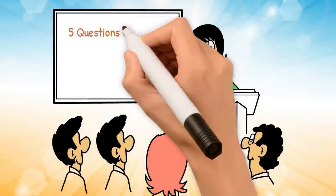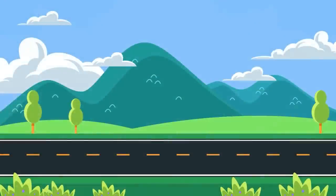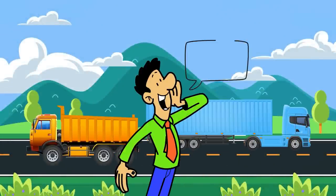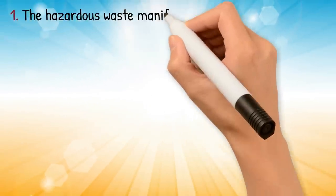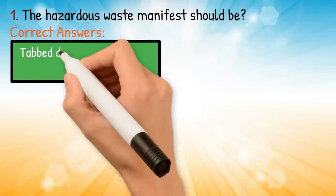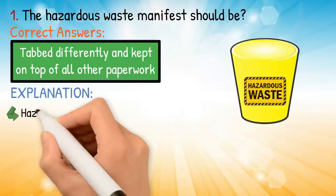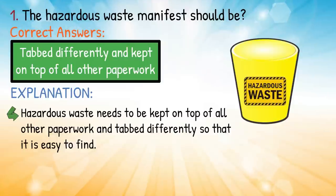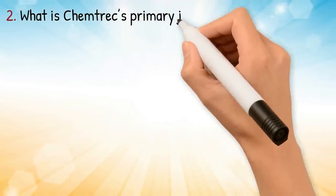Five questions and answers to help pass the hazardous material CDL endorsement test. Before we get started, please like and subscribe if you enjoy and would like more content about CDL education. Question one: the hazardous waste manifest should be — correct answer: tabbed differently and kept on top of all other paperwork. Explanation: hazardous waste needs to be kept on top of all other paperwork and tabbed differently so that it is easy to find. Question two: what is CHEMTREC's primary job?